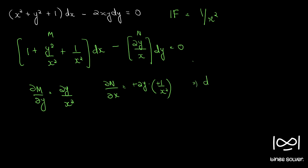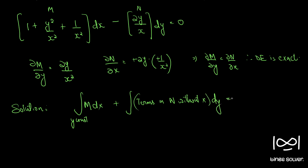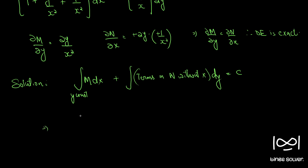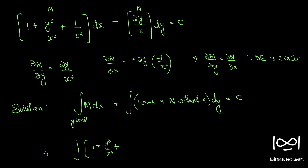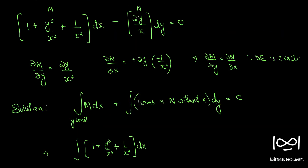Therefore ∂M/∂y equals ∂N/∂x, confirming this differential equation is now exact. The solution for an exact equation is given by: integral of M dx (treating y as constant) plus integral of terms in N without x dy equals c. Our M is (1 + y²)/x² + 1/x², and there are no terms in N without x, so the second integral vanishes.